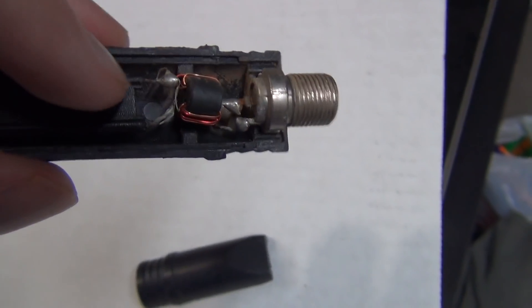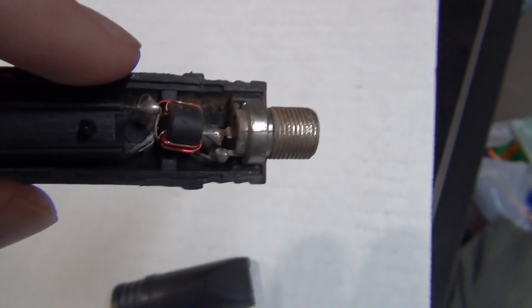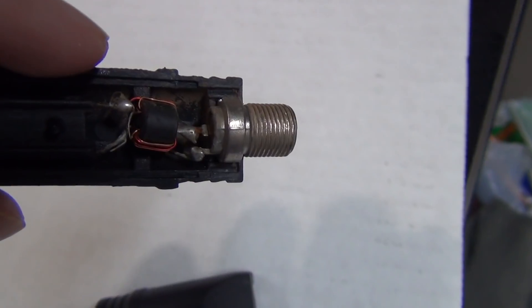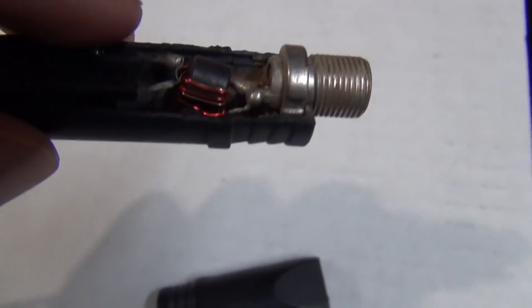And then right there you can see the two leads go to a ferrite magnet which converts it from 300 ohm to 75 ohm.